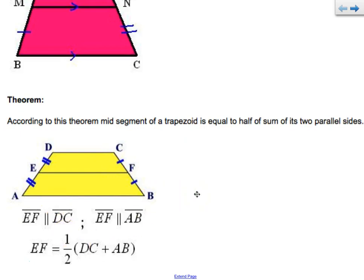The theorem of a triangle midsegment: According to this theorem, the midsegment of a trapezoid equals half of the sum of the two parallel sides. So if EF is parallel to DC and EF is parallel to AB, then the midsegment equals half of both of my bases added together.